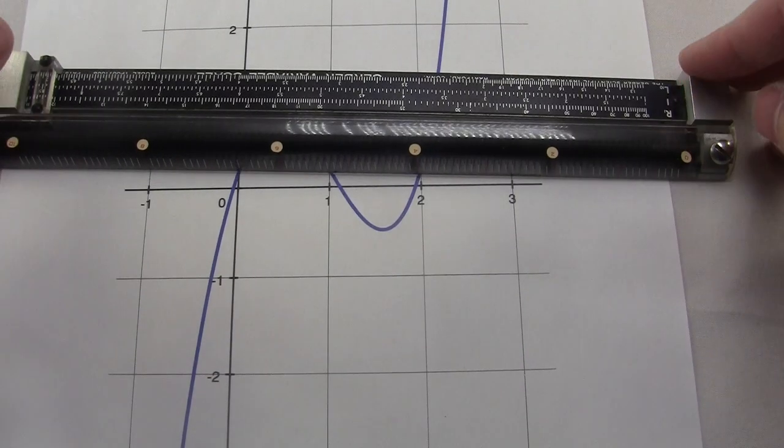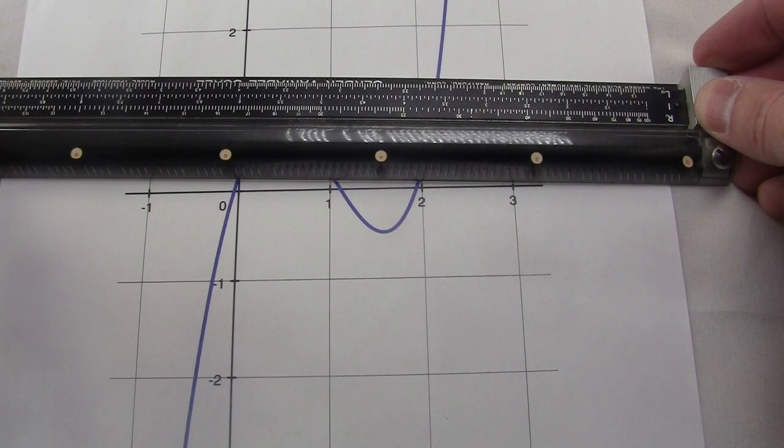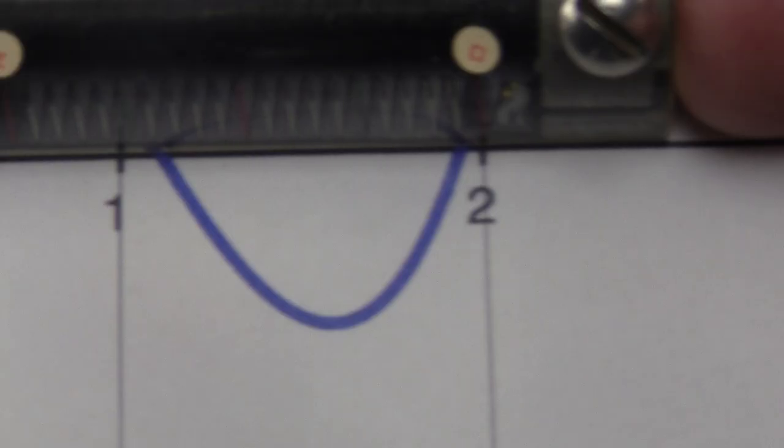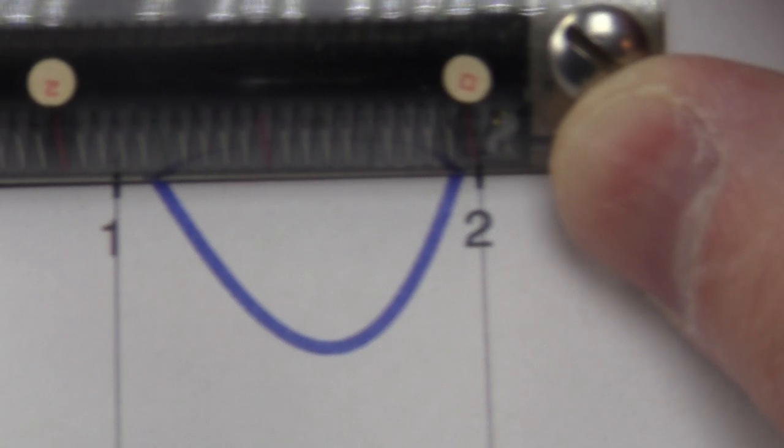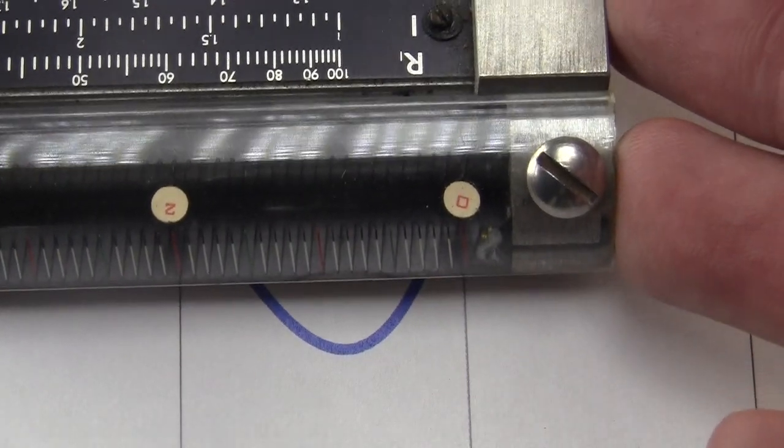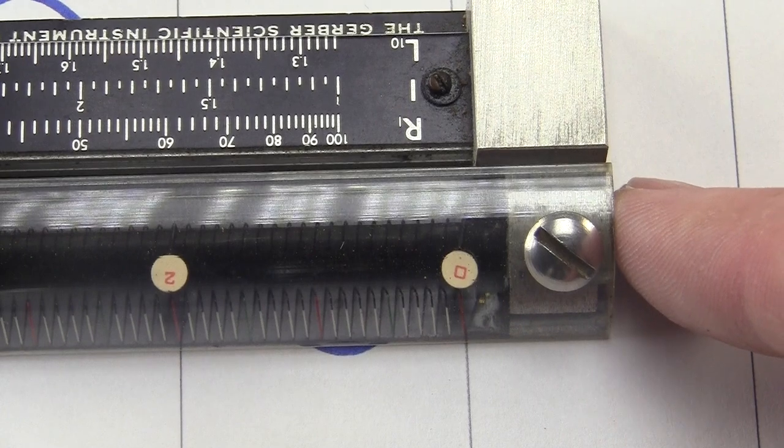But check this out. I can just stretch the variable scale, and it'll instantly give me subdivisions as fine as I want. See, I'll stretch the scale to give me two full units across this grid square. And now I can read the position as actually something like 1.55.